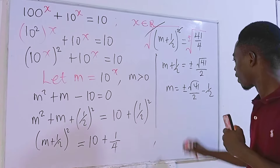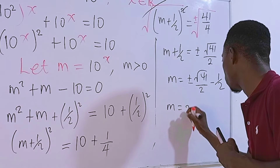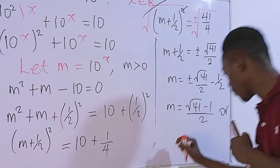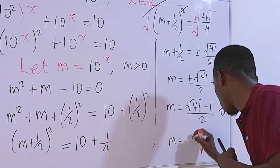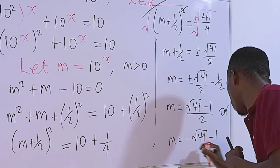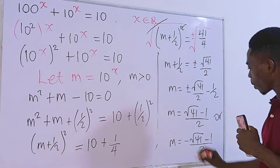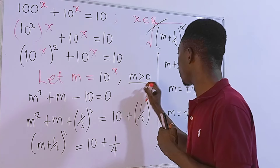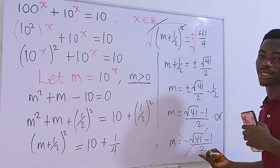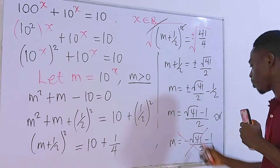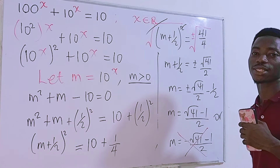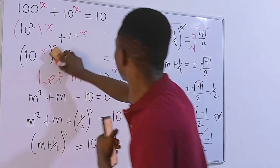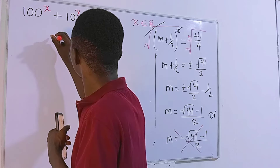The two solutions for m are: m = (√41 − 1)/2, or m = (−√41 − 1)/2. We reject the second value because we required m > 0, and (−√41 − 1)/2 is less than zero — keeping it would yield imaginary answers, which we're not interested in. So m = (√41 − 1)/2.